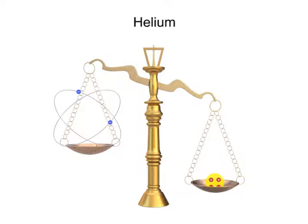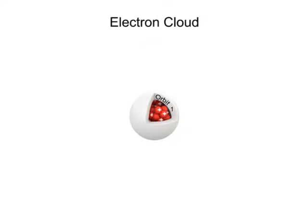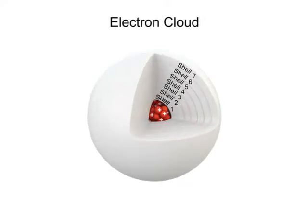Electrons are arranged in the electron cloud by the distance of their orbit from the nucleus. These orbital layers are also referred to as shells. Each shell can hold only a certain number of electrons.